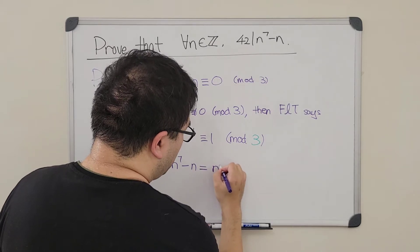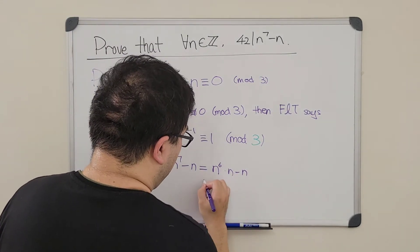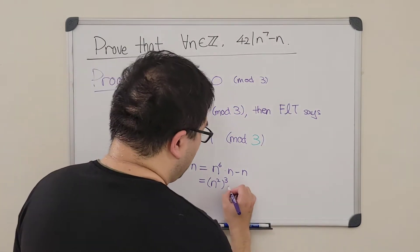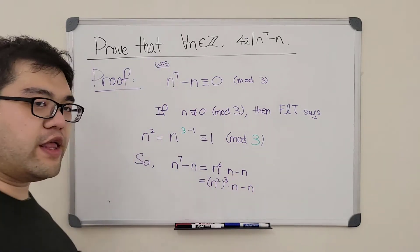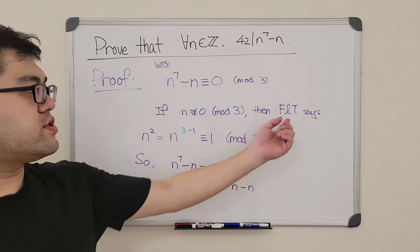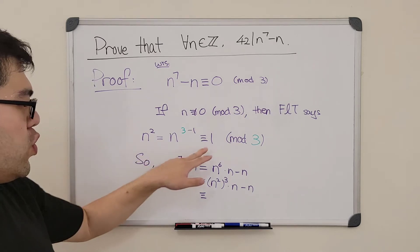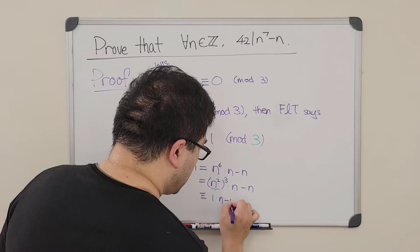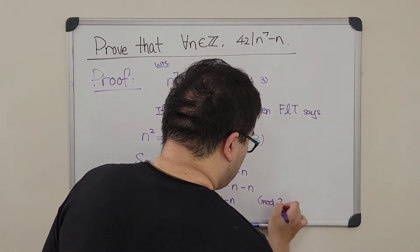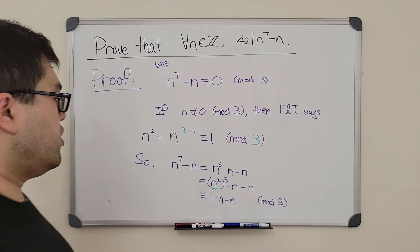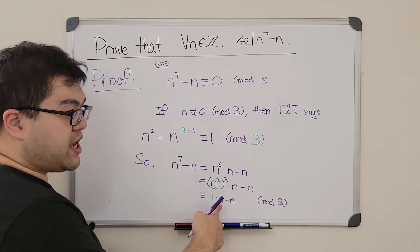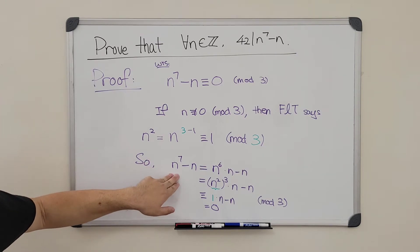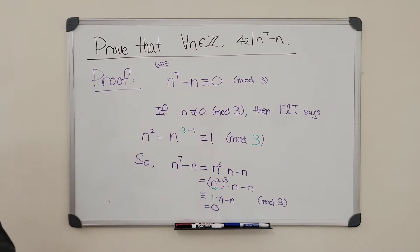Rewriting with the exponent property and using that n squared ≡ 1 (mod 3), we substitute: (n²)³ becomes 1 to the third power, which is 1. So the expression becomes 1 times n minus n, which is n minus n equals zero. In both cases — whether n is a multiple of 3 or not — the expression n to the seventh power minus n is always congruent to zero mod 3, meaning it is always a multiple of 3.